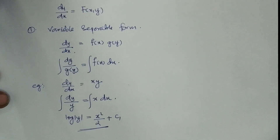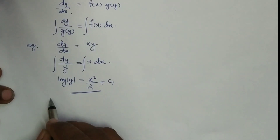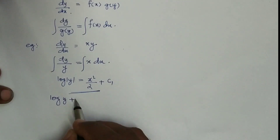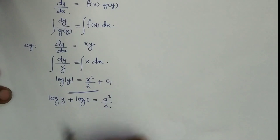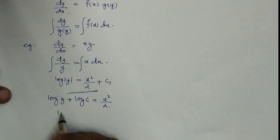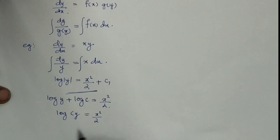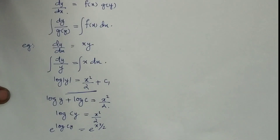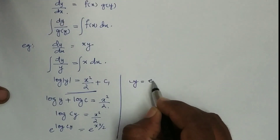We can simplify further. Writing the constant as log c, the left side becomes log y + log c = log(yc), using the log property log a + log b = log(ab). The right side is x²/2. Taking the exponential of both sides, e and log cancel, giving yc = e^(x²/2).